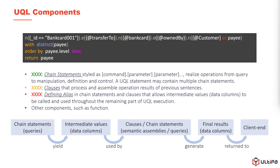Let's check an example to see what a UQL statement looks like. From an entity with ID bank card 001, transfer to another bank card, which is owned by a customer. Mark this customer as payee. Then take all the distinct payees, order them by their level in descending fashion, and return these payees. This first sentence, highlighted in green color, is the chain statement. It presents in the form of a command followed by a series of parameters. It realizes operations from query to manipulation, definition, and control.